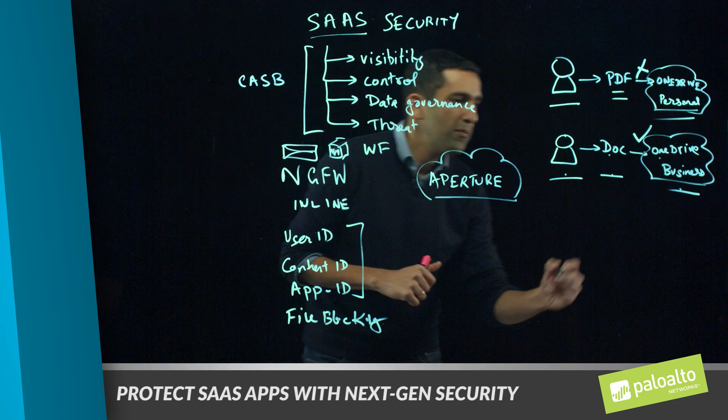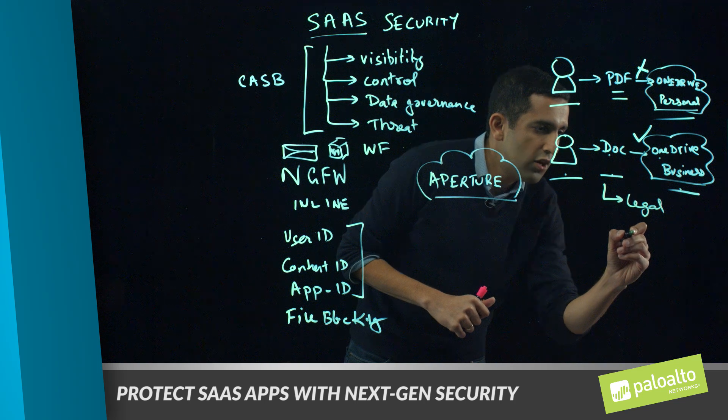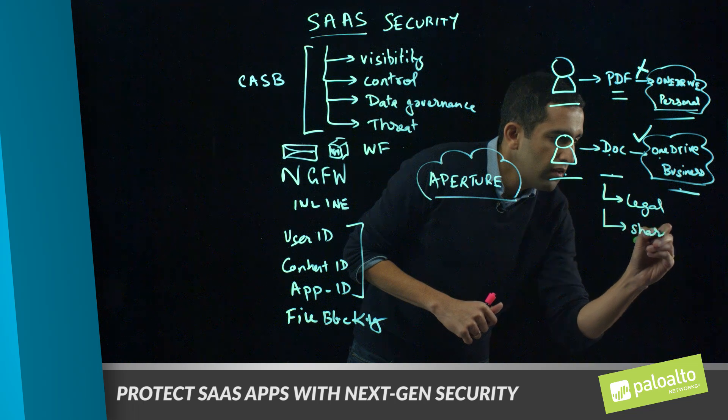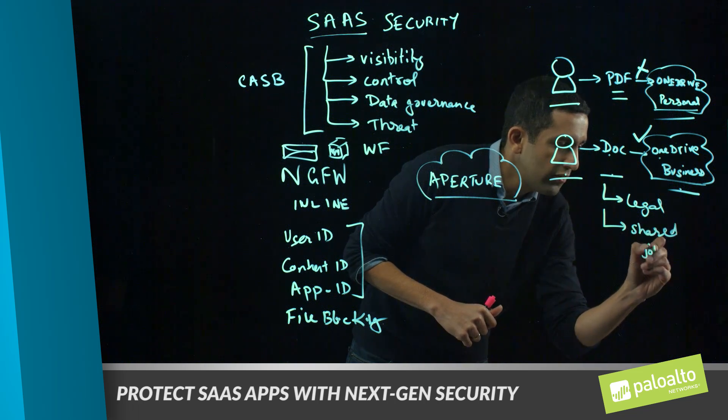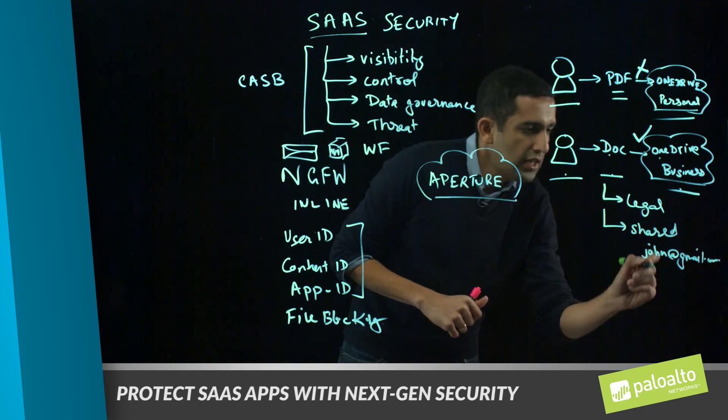We just saw how the Next Generation Firewall can provide detailed visibility as well as control for SaaS security. Now let's see how Aperture comes into the picture by extending the second example. Let's say this doc file is actually a sensitive legal document that you don't want going outside, and it has been shared with a personal email address — john at gmail.com. John has shared this to his personal email, so he has access to it even if he leaves the company; even if his corporate email was disabled, he would still have access.